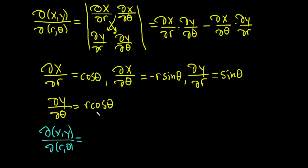So del x del r, that's this one here, cosine theta. That's this first piece here. And then del y del theta is going to be this one down here. So r cosine theta.